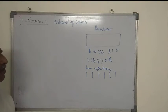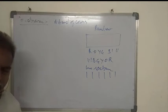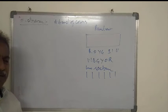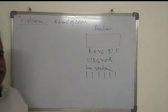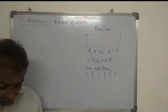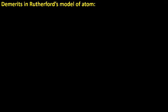Rutherford's model proposed the nucleus of the atom, which is the most important contribution. But at the end, it could not give the stability of the atom.